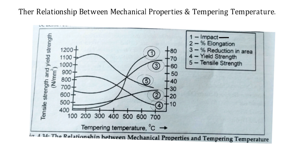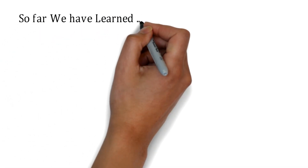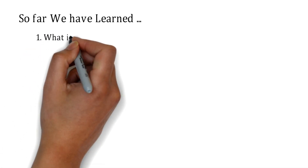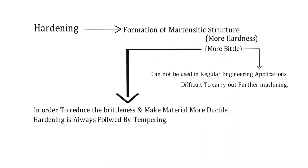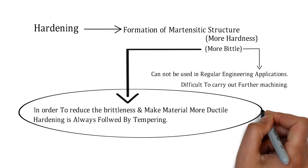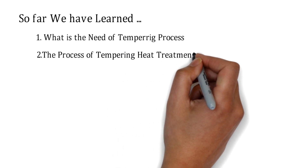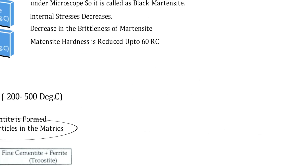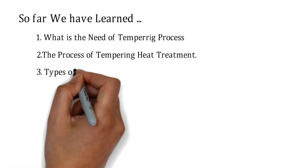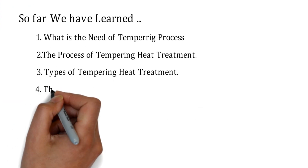To summarize, we have learned: first, what is the need for tempering and why the tempering process is carried out; second, the process of tempering itself; third, the types of tempering heat treatment — low, medium, and high temperature tempering; and fourth, the relationship between tempering temperature and mechanical properties.